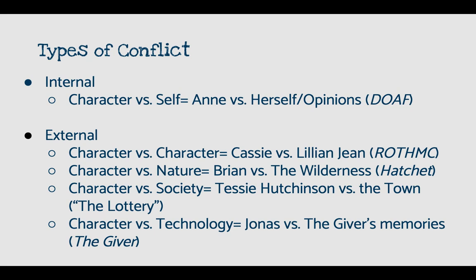The last one is character versus technology. This is big in a lot of dystopian fiction, and one of the biggest examples is the book The Giver. Jonas, the main character, has to receive The Giver's memories, and there's a lot of conflict against the technology involved, as well as the knowledge he learns from it. The Giver is probably one of the best examples in young adult literature of character versus technology.